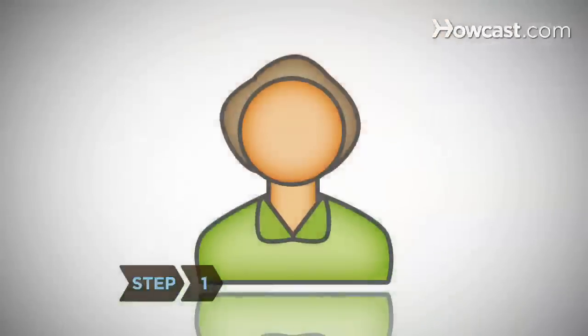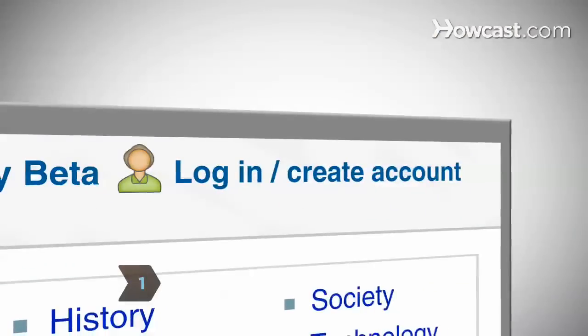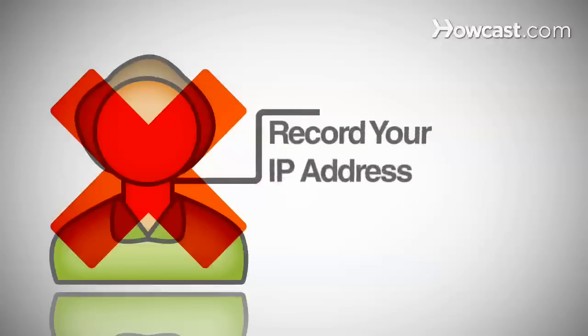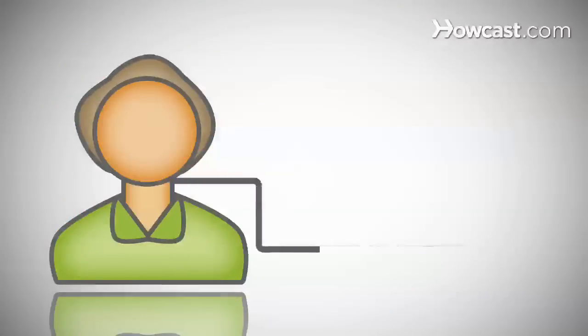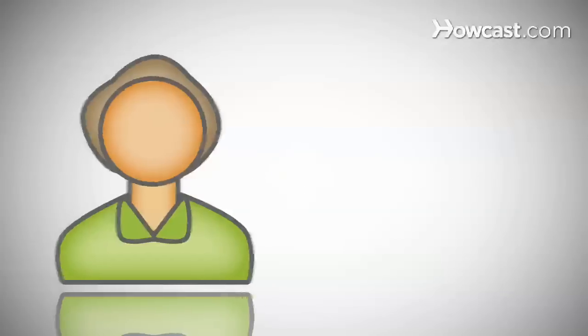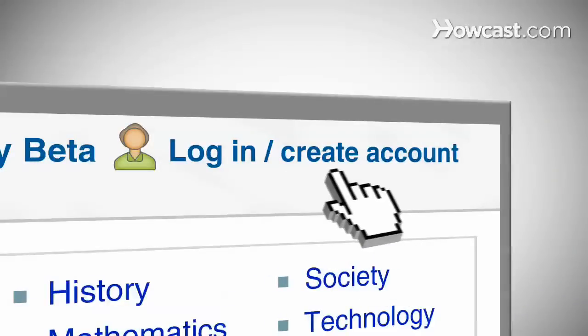Step 1. If you're not already a registered Wikipedia user, consider becoming one. If you edit a piece without registering, the site will record your IP address publicly in the article's edit history. With an account, you can also start new pages and upload images. To register, click Create Account at the top right of any page.